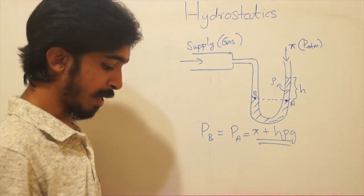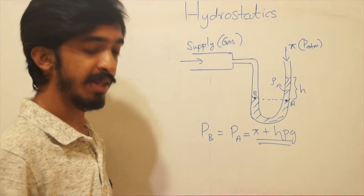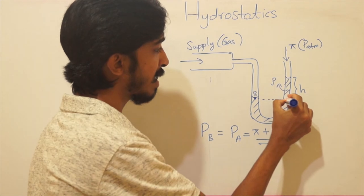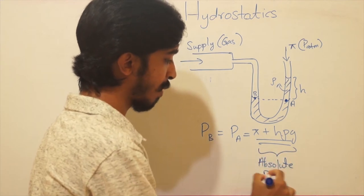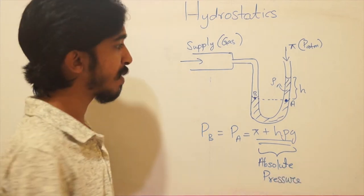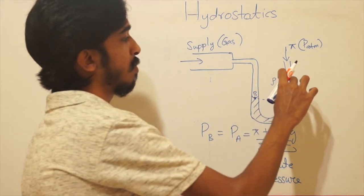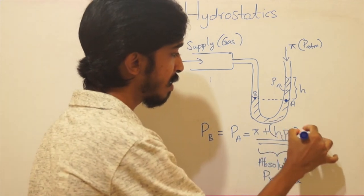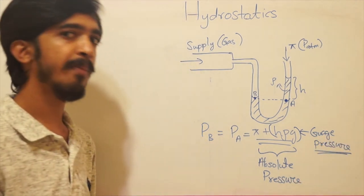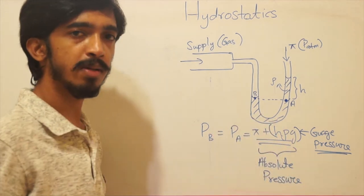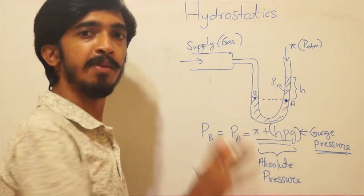There are two components of pressure: absolute pressure and gauge pressure. Absolute pressure is the actual pressure at point A, which is P_atm + hρg — the true pressure. Gauge pressure is the pressure at that point if atmospheric pressure is taken as zero, i.e., the reading from the manometer alone, which is just hρg. So if you find pressure and ignore the atmospheric pressure part, you get the gauge pressure from a simple manometer.